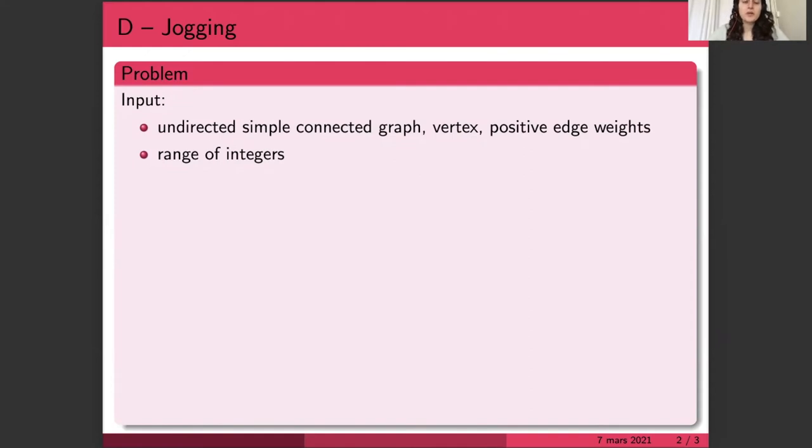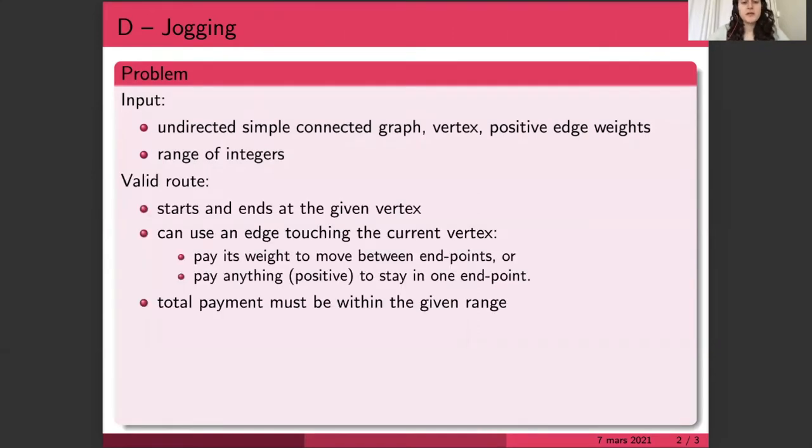We're also given a range of the length of a valid run. A valid run starts and ends at Phoebe's home, and we can use an edge if it touches the vertex where we currently are in two ways. One way is to go through the entire length of the edge and then end up at the other endpoint.